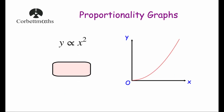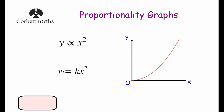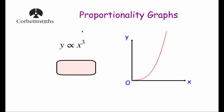For y is directly proportional to x squared, we get rid of the proportionality symbol and write y equals k times x squared. This would be the x squared graph, starting at the origin and going upwards — it has the right-hand side of a parabola, curving upwards and getting steeper and steeper. If k is a large number it gets steeper; if k is a small decimal it's shallower. Overall it starts at the origin and follows the shape of the right-hand side of a parabola.